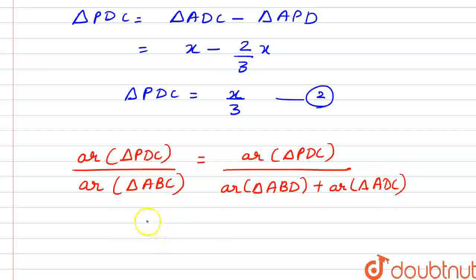So here we will substitute our values. What is area of triangle PDC? X/3, divided by area of triangle ABD plus area of triangle ADC. So here we have X/3 upon 2X.